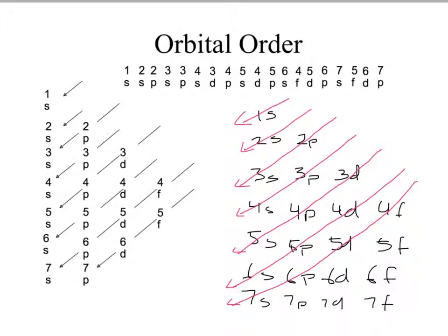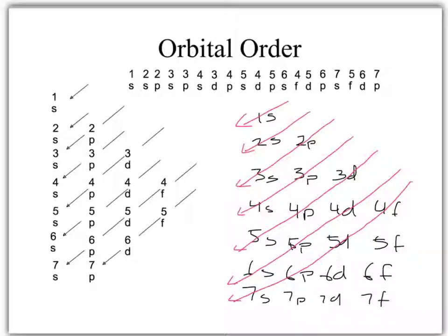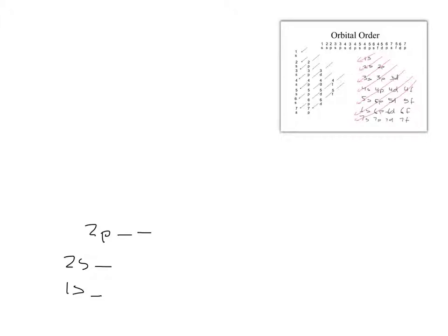What do the arrows do? These arrows tell you what order the orbitals go in on the Aufbau diagram. So if I were to draw an Aufbau diagram, my 1S would be first, then looking at the red arrow: 2S is next, then 2P with three orbitals, then 3S. By looking at this chart, I can easily determine the Aufbau diagram order.